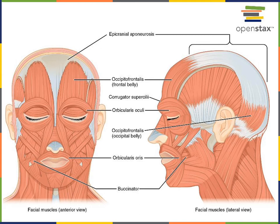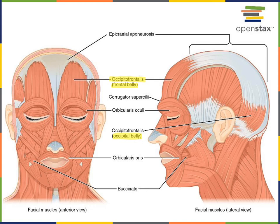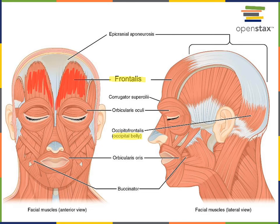There is a muscle overlying the frontal bone known as the frontal belly of occipitofrontalis. Occipitofrontalis is a muscle covering the superior surface of the cranium that has two muscle bellies: an occipital belly found on the posterior overlying the occipital bone, and a frontal belly found on the anterior overlying the frontal bone. I prefer just to drop the first part and use frontalis, which is a synonym for occipitofrontalis — this muscle overlying the frontal bone on the anterior of the cranium.